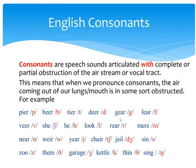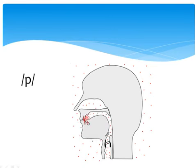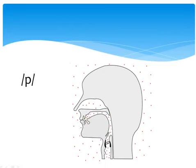For example, we say 'peer', 'bear', 'tear', 'dear', 'gear'. When we say 'gear', we obstruct the air for some time and then release it. When we say 'fear', we obstruct the air to produce the sound. For the /p/ sound, we can see that the air is obstructed for some time and then released — 'p', 'p', 'p' — we obstruct the air and then release it.